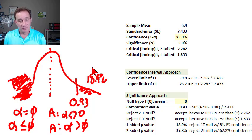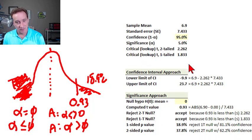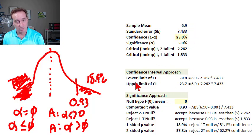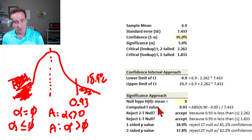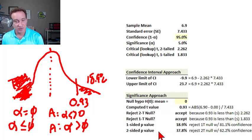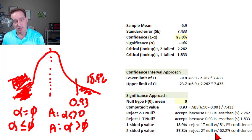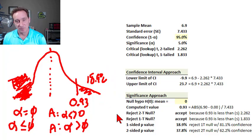So those are the three different ways to test this. Given that we've computed the standard error and observed the sample mean, we can compute the confidence intervals, compare the computed value to the test statistic, and finally - most efficiently - generate the P-value and interpret it. I'll upload the spreadsheet and I hope that's helpful.